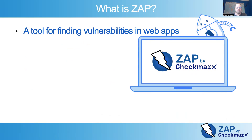So what is Zap? Zap is a tool for finding vulnerabilities in web applications. It doesn't really work by looking for known vulnerabilities in known applications. It works more like a penetration tester or a malicious attacker, so it can find new vulnerabilities in applications that no one has ever seen before.